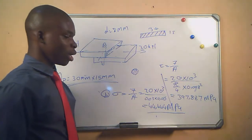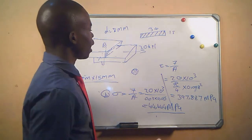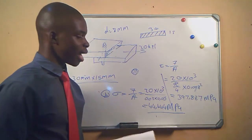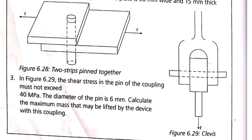And then we will look at a second exercise which reads like this: In figure 6.29, the shear stress in the pin of a coupling must not exceed 40 megapascals. The diameter of the pin is 6 millimeters. Calculate the maximum mass that may be lifted by the device with this coupling.